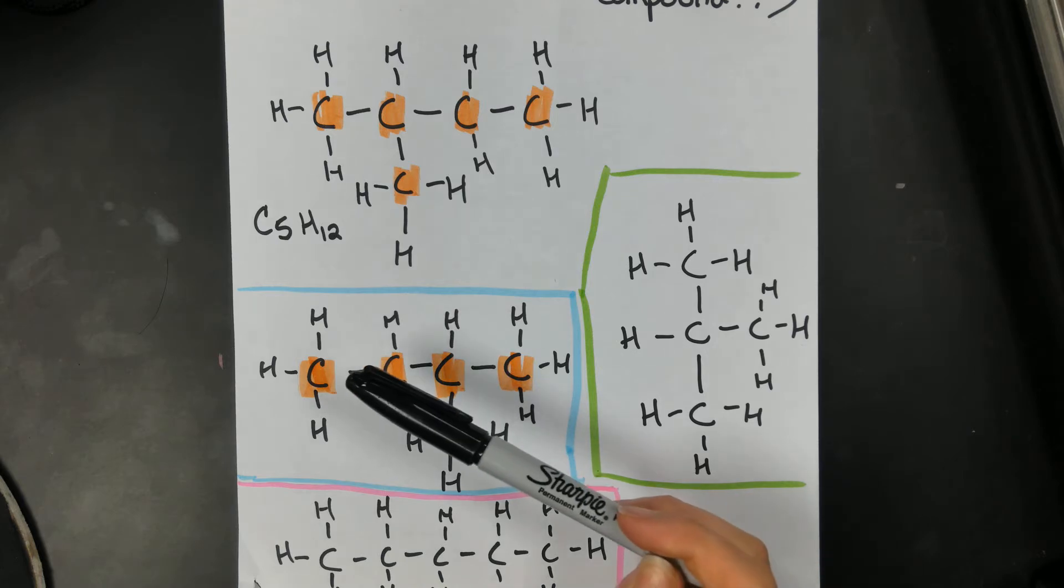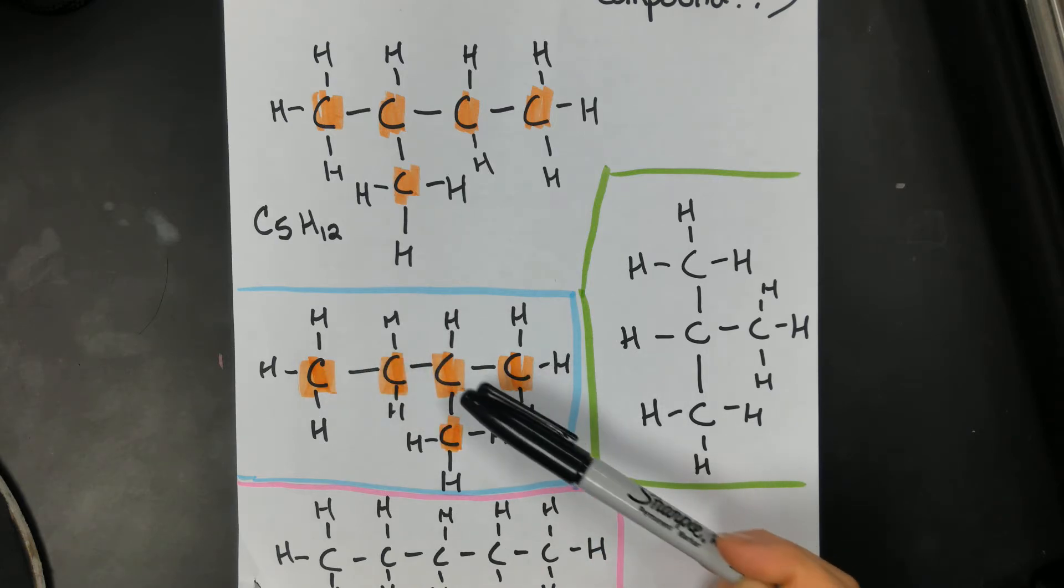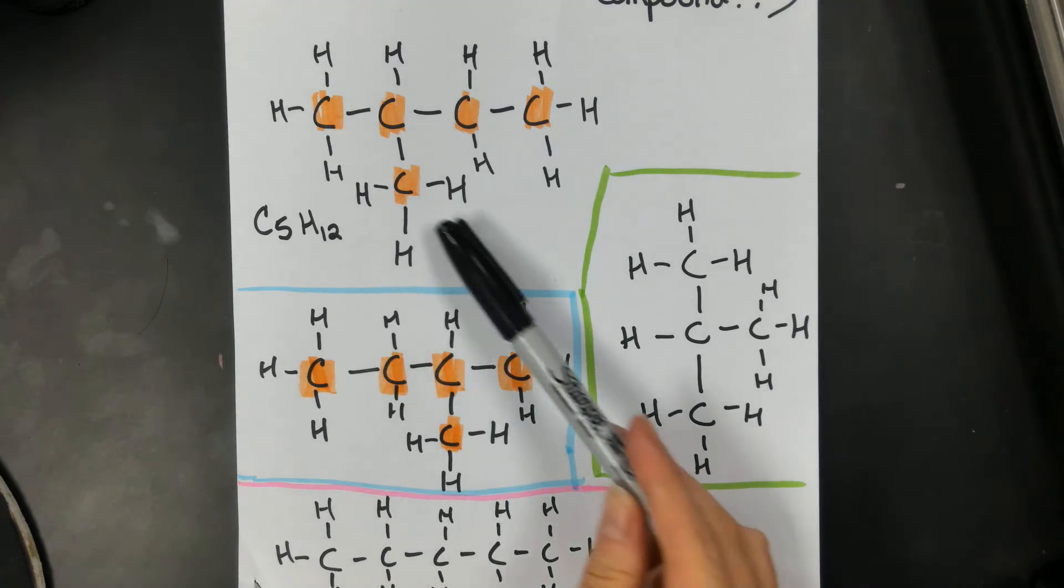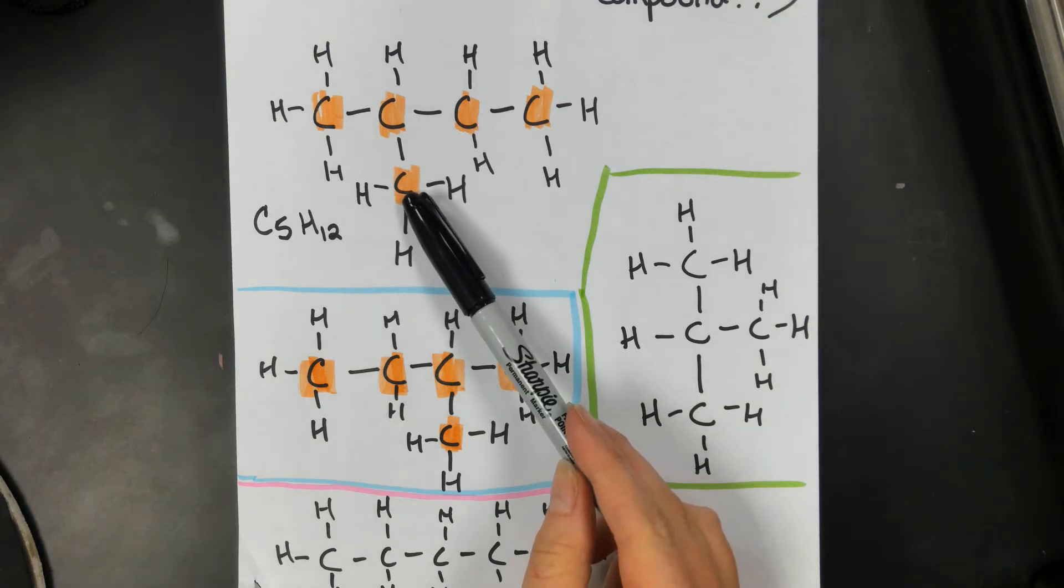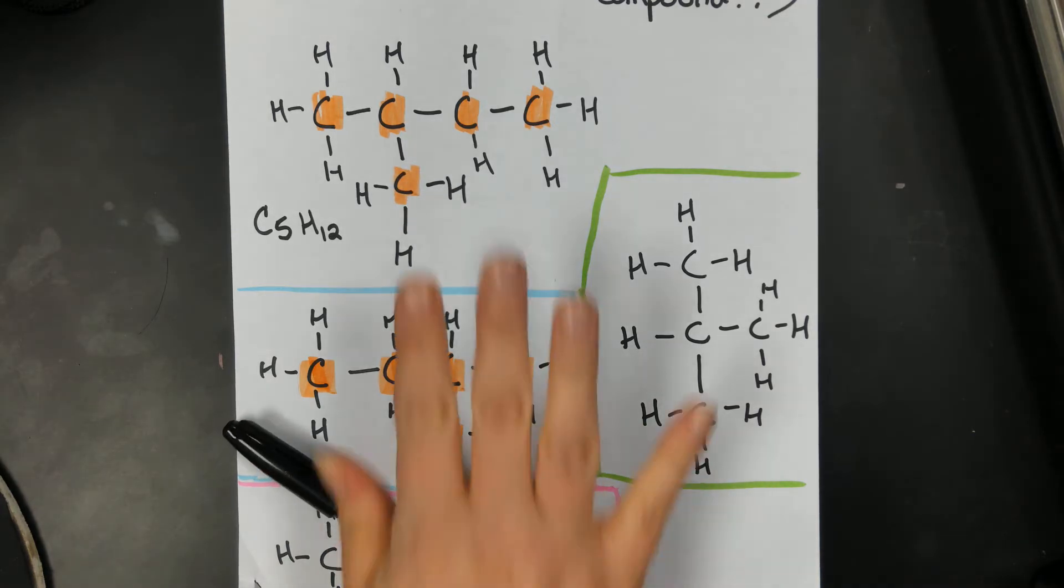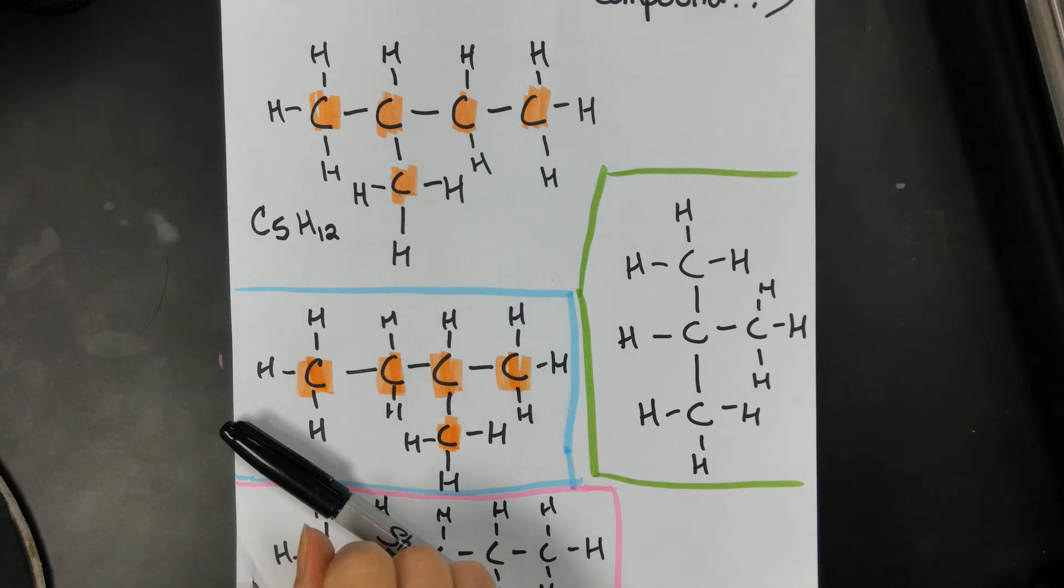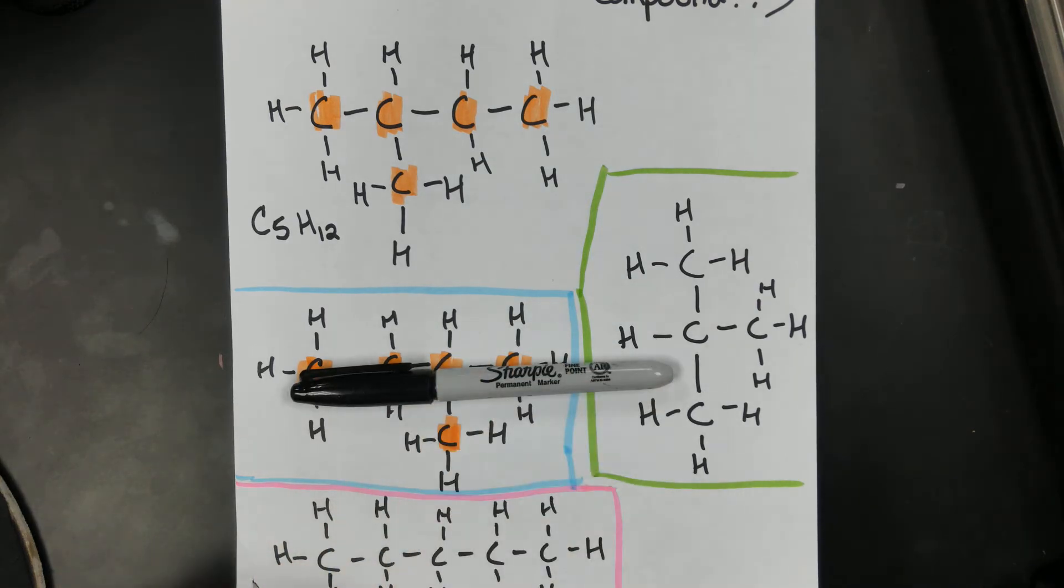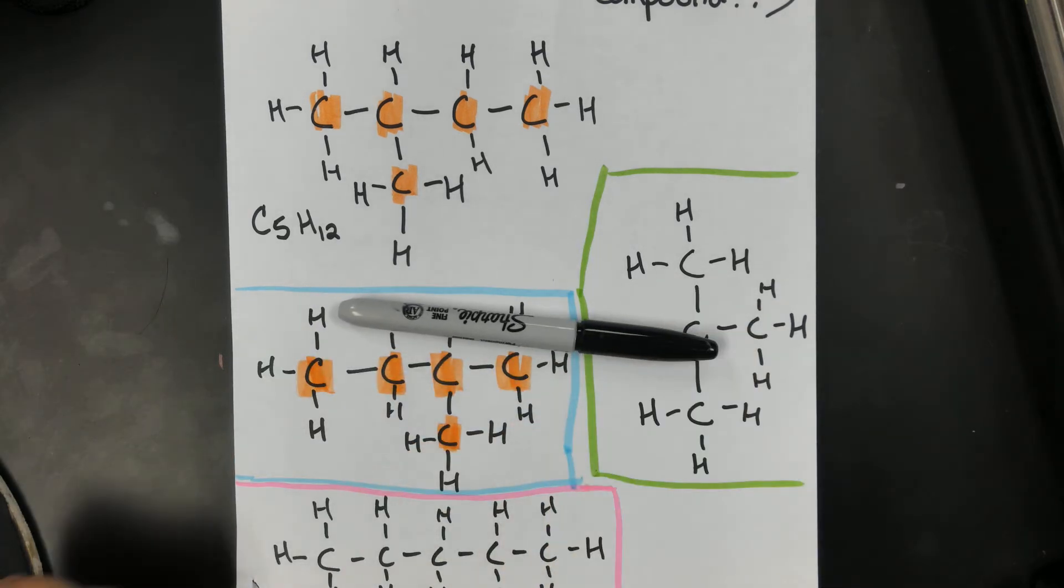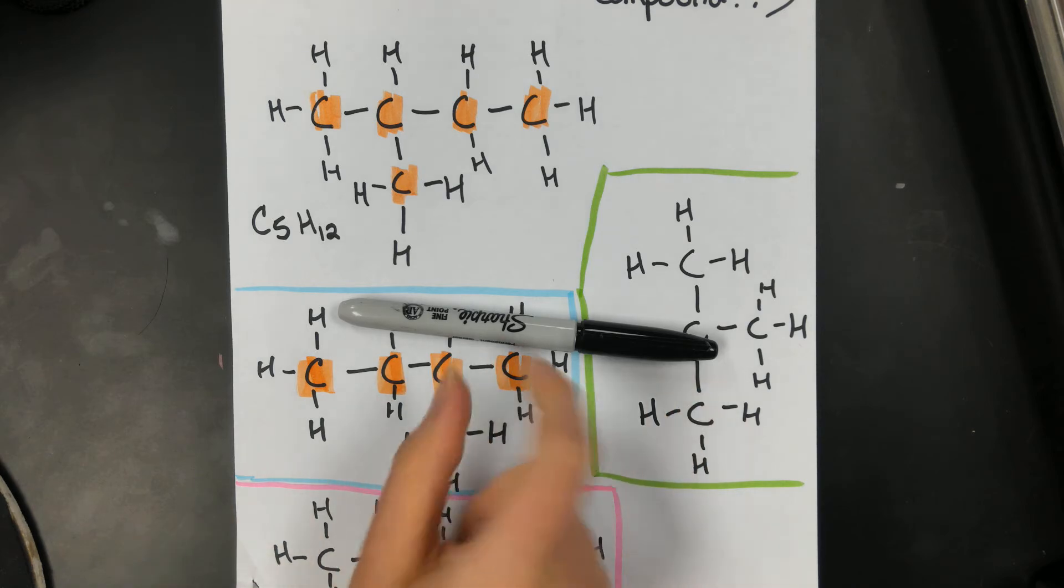So that's a good sign. And we have four carbons in a row and one carbon bound off on the side. Hey, that looks like the same compound, doesn't it? It's just that it's flipped. But isn't it the same compound? If I had my marker sitting like this, but I also put it this way, isn't it the same marker? Yes.